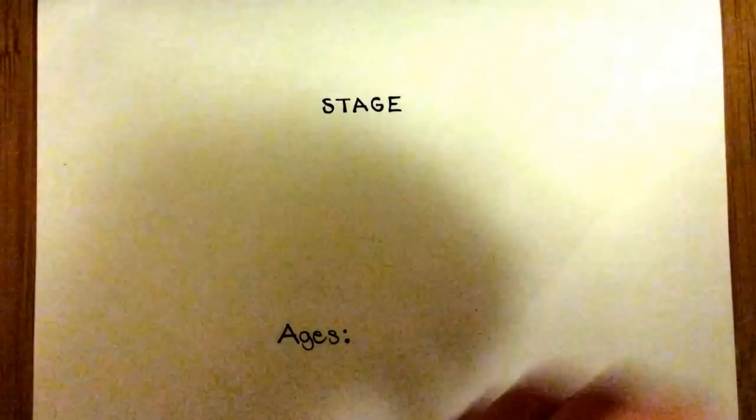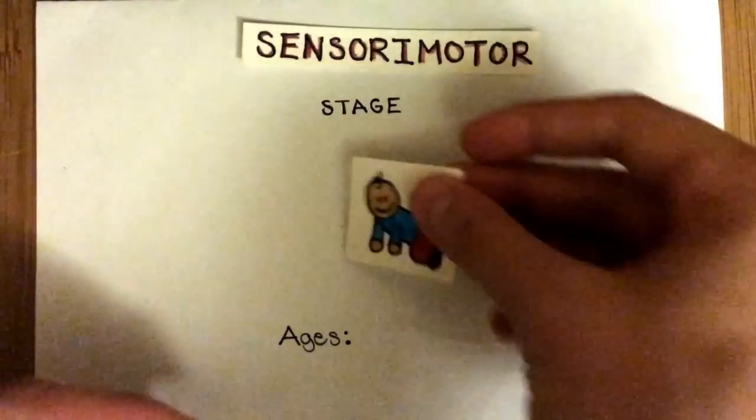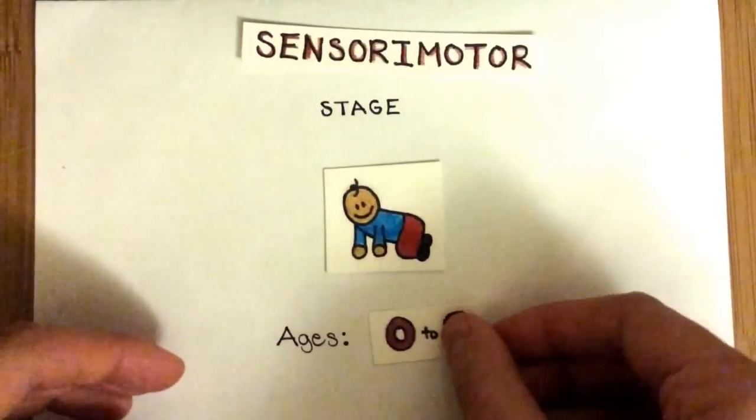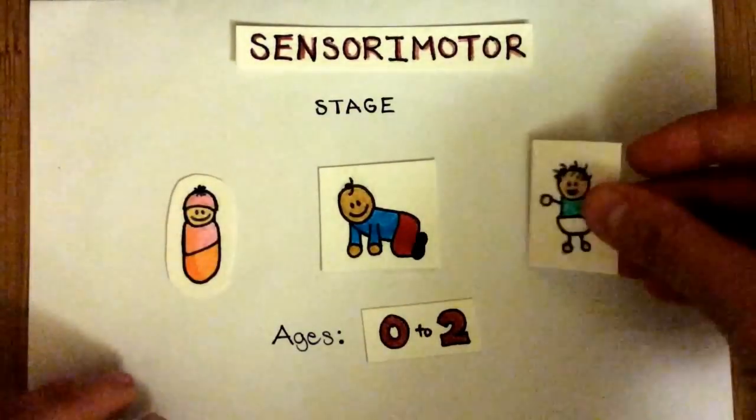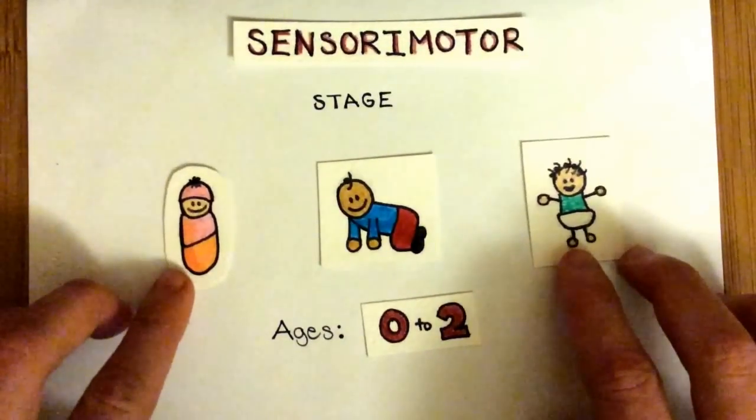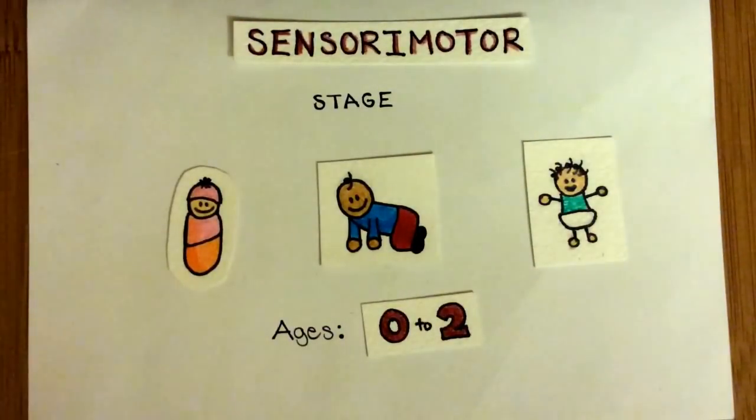The first stage is the sensory motor stage, which includes infants and toddlers from ages 0 to 2. During this stage of rapid growth, development of intelligence is closely tied to sensory, perceptual, and motor abilities. As children develop their motor skills, they are increasingly able to explore their surrounding environment.